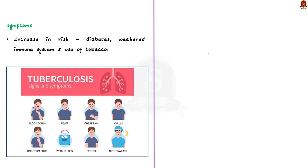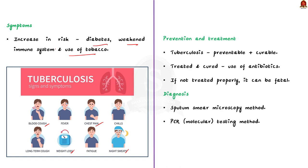The common symptoms of TB include prolonged cough, chest pain, weakness, weight loss, fever and night sweats. Certain conditions like diabetes, weakened immune system and tobacco use can increase a person's risk for tuberculosis. Tuberculosis is preventable as well as curable. It is treated and almost cured with the use of antibiotics, but if not treated properly, it can be fatal.